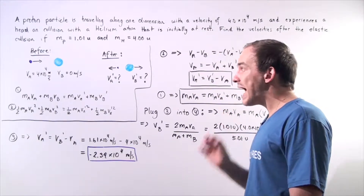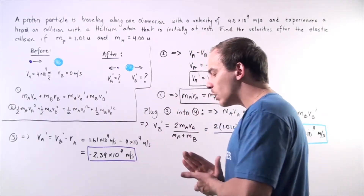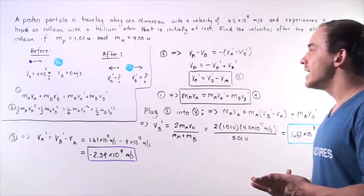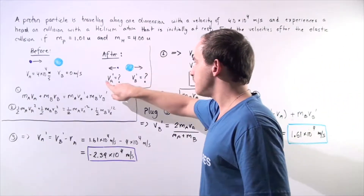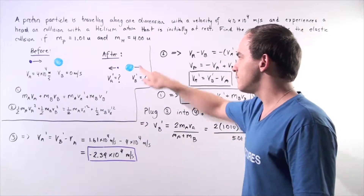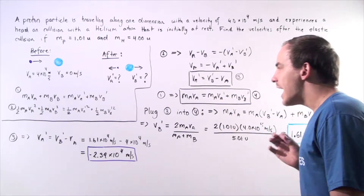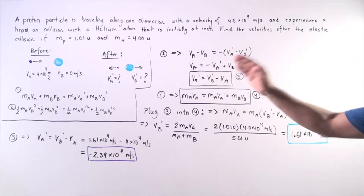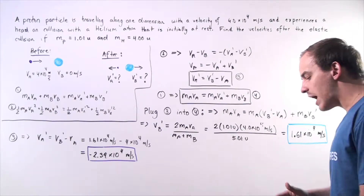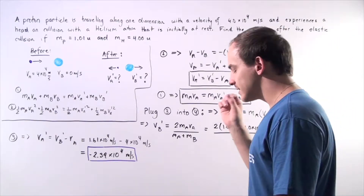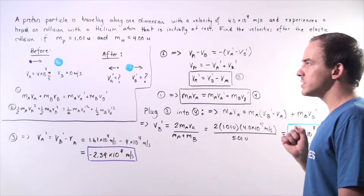Our helium atom's velocity Vb is 0 meters per second before our collision takes place. After our collision takes place, the velocity of the proton Va' and the velocity of our helium atom Vb' are unknown. We want to calculate the magnitude and direction of these velocities after our elastic collision takes place.